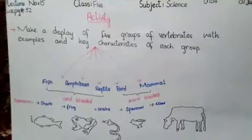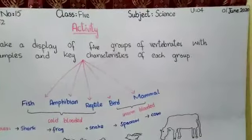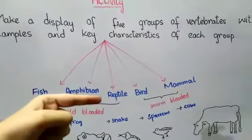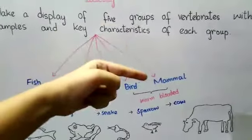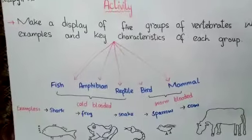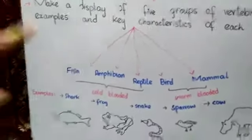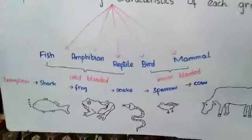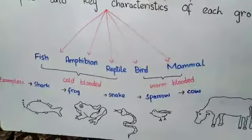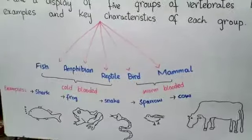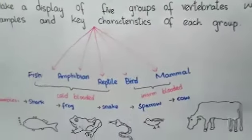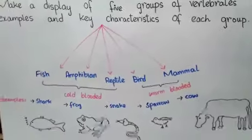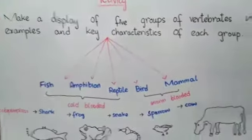The five groups of vertebrates are: the first one is fish, the second is amphibian, the third is reptile, the fourth is bird, and the fifth and last one is mammal. You don't need any confusion — you already know fishes, amphibians, reptiles, and birds. Mammals are organisms which produce live babies and have hairs on their body.